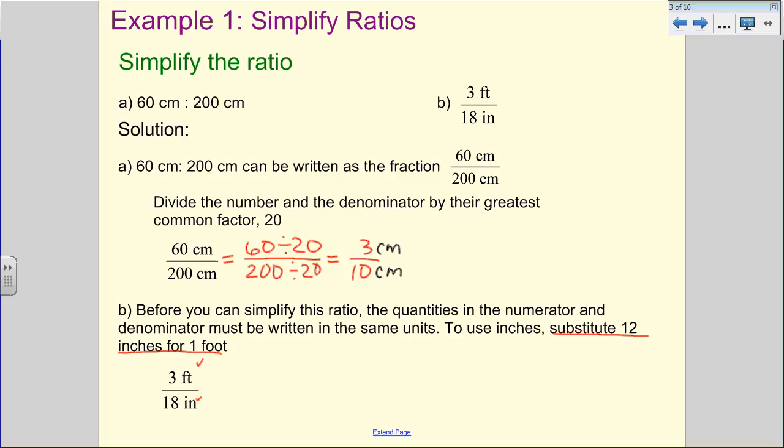So if we take a look at that, we're going to have 3 over 18 inches. What we're going to have to do is multiply that 3 by 12. And so then what that's going to give me is 36 inches over 18 inches. The common factor there for 36 and 18 is 18. And so we're going to take 36 divided by 18 and 18 divided by 18. When we do that, we get 2 to 1.